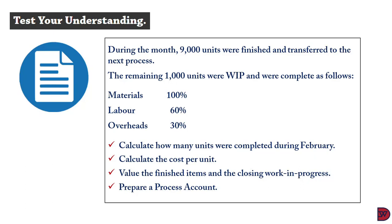During the month, 9,000 units were finished and transferred to the next process. The remaining 1,000 units were work in progress, completed as follows: materials 100%, labor 60%, overheads 30%. We need to calculate how many units were completed during February, calculate the cost per unit, value the finished items and the closing work in progress, and prepare a process account.